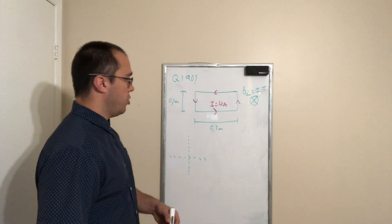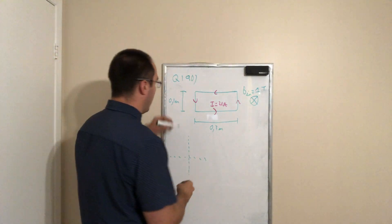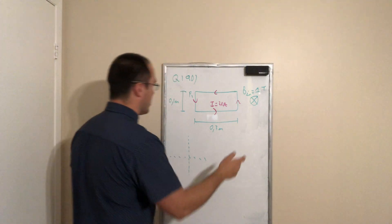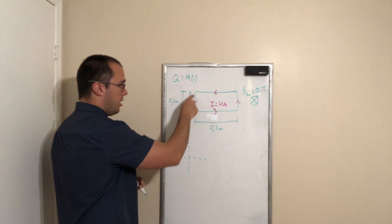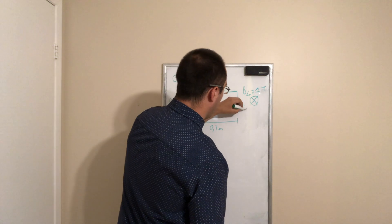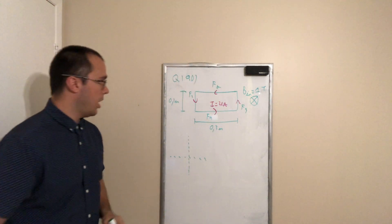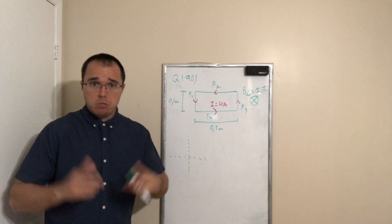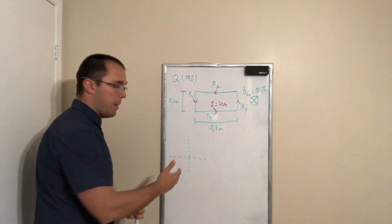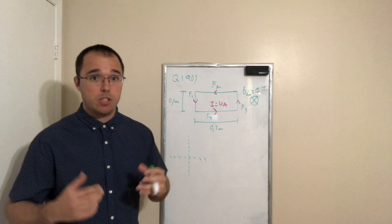So again, we're going to use a similar logic that we used in the previous example. I'm gonna give annotation to each of the four forces acting on this frame. The left one will be F1, the top one will be F2, the right one will be F3, and the bottom one will be F4. So let's draw a vector diagram and identify the direction of each of these force vectors.